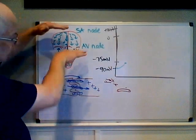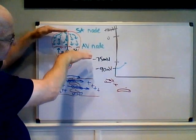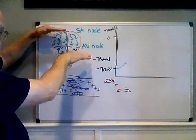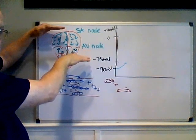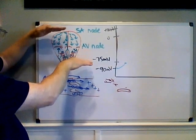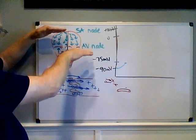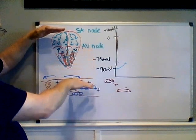But when the SA node fires, the AV node would take much longer to fire on its own. For example, if the SA node is firing, it's going to do about 75 beats per minute on average.